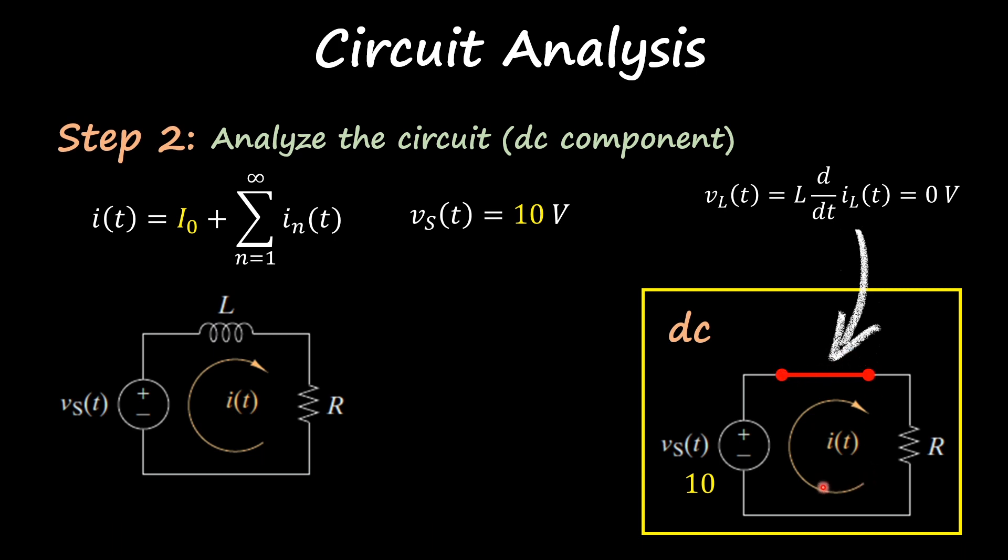Now it's simple Ohm's law: 10 divided by R gives you a DC current of 0.2 amps.